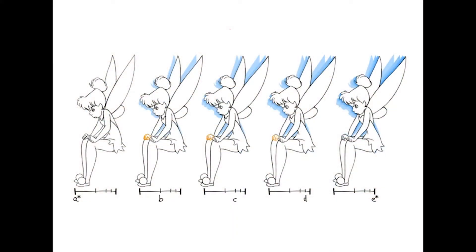To illustrate the challenges of interpolating 2D animations, consider this very simple example of 5 frames of a Disney character. The motion, even in these 5 frames, is quite small. In fact, if you didn't have the highlight in blue that shows you the position of the character in the previous frames, you could hardly realize that the character moved at all.